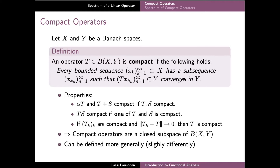Compact operators are quite a nicely behaving class of bounded operators. In particular, scalar multiples and sums of two compact operators are compact, and the composition of two bounded operators T and S is compact if at least one of the operators is compact. Moreover, if a sequence of compact operators converges to a limit operator T in the operator norm, then the limit T is also a compact operator.